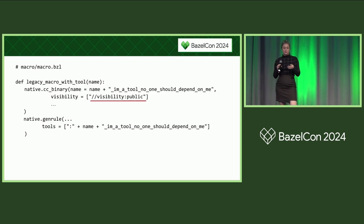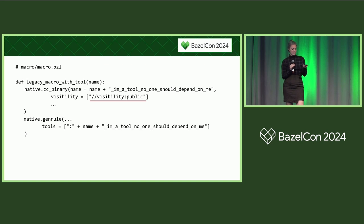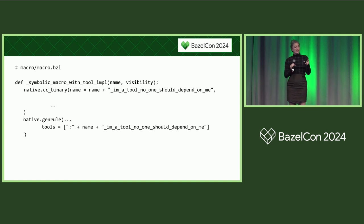In addition to no longer forcing public visibility for tools used by macros, symbolic macros are also better at restricting visibility for targets that are implementation details. For example, a macro creates two targets — the first is an implementation detail that no one else should depend on, but it's used by the genrule. For a legacy macro, it needs to be public for the genrule to use it. But in a symbolic macro, you can declare that target's visibility as private, and it'll still be visible within the macro itself. This private visibility is the default for targets created within macros.